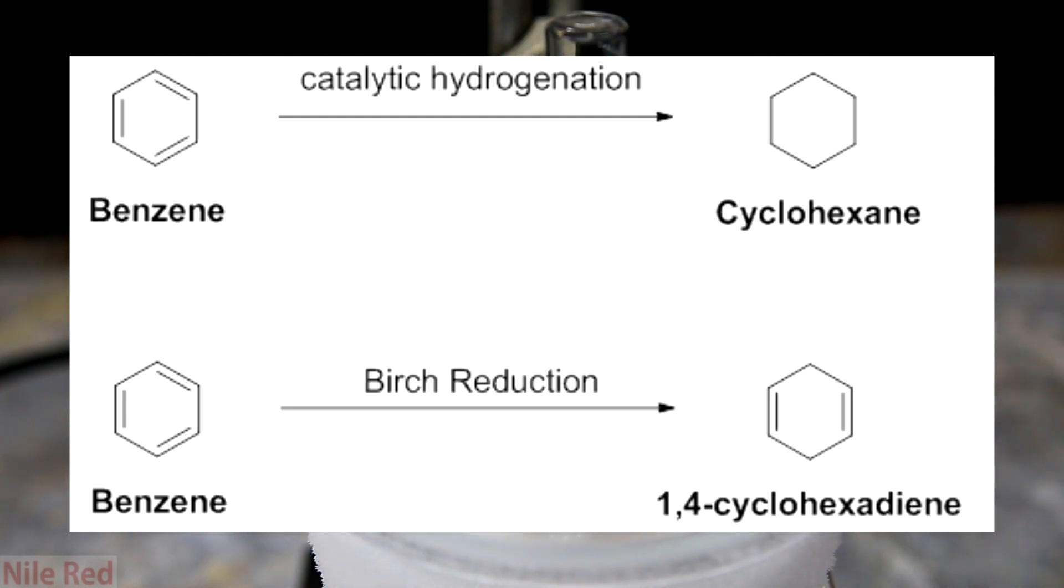As you can see though in the example of the Birch reduction it doesn't remove everything and there's still some double bonds left over. This incomplete reduction is useful and opens up the ability to make new products.